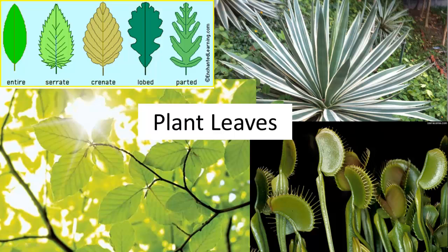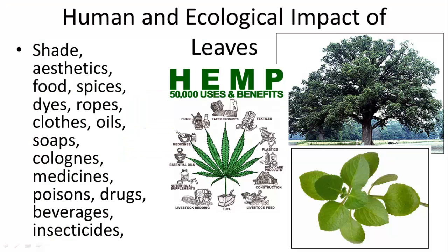We've done roots, we've done stems, and now we're moving on to leaves. As you can see, leaves take many different functions and shapes, and we'll go over those different types. First thing first, leaves are very important for human use. We use them for shade and for many materials.